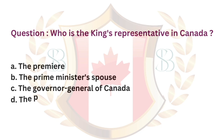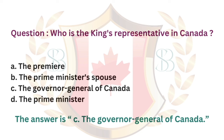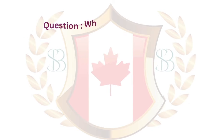Question. Who is the king's representative in Canada? a. The Premier. b. The Prime Minister's spouse. c. The Governor-General of Canada. d. The Prime Minister. The answer is c. The Governor-General of Canada.